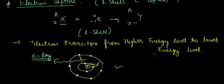With this we come to the end of this lecture. In the next lecture we'll be looking at the summary of the table of emission of different particles, and then we'll be looking at the nuclear stability belt. Good luck and goodbye.